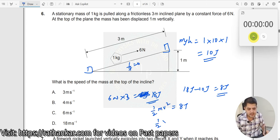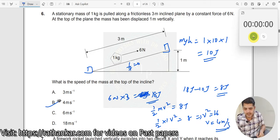Now, m is equal to 1, so half into 1 into v square is equal to 8 which means v square should be equal to 16, v should be 4 meter per second. So this should be your answer. B is your answer.